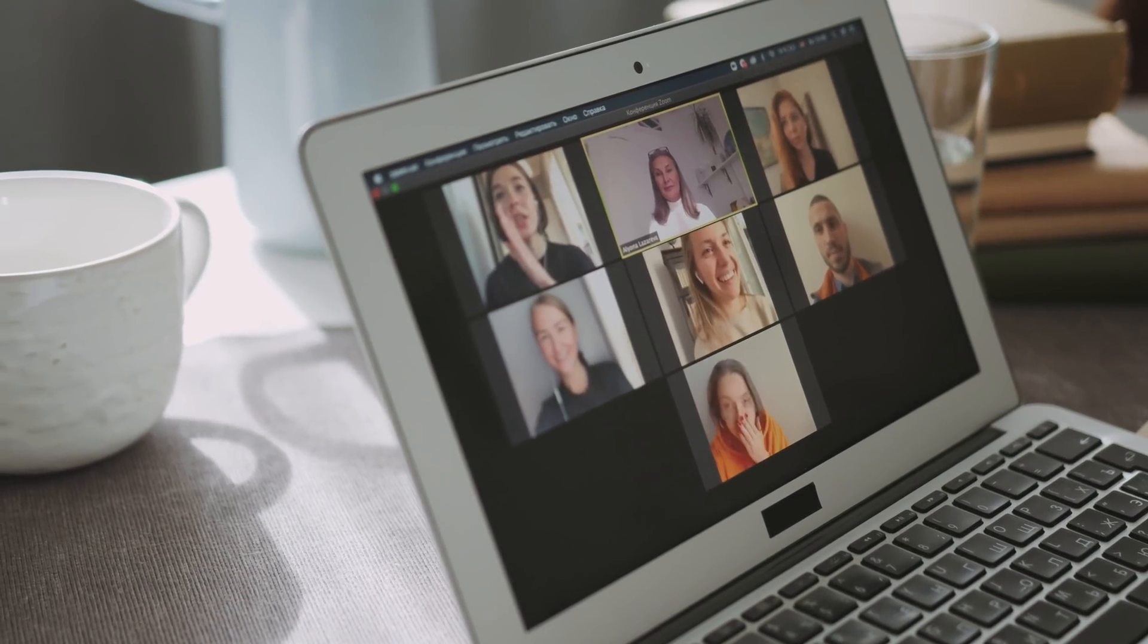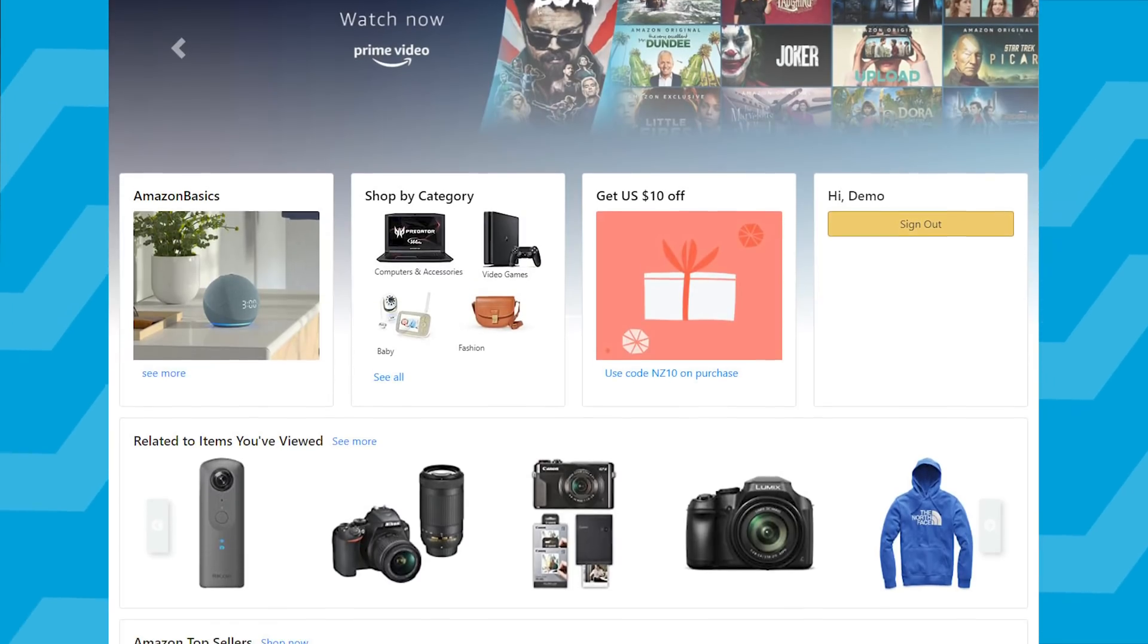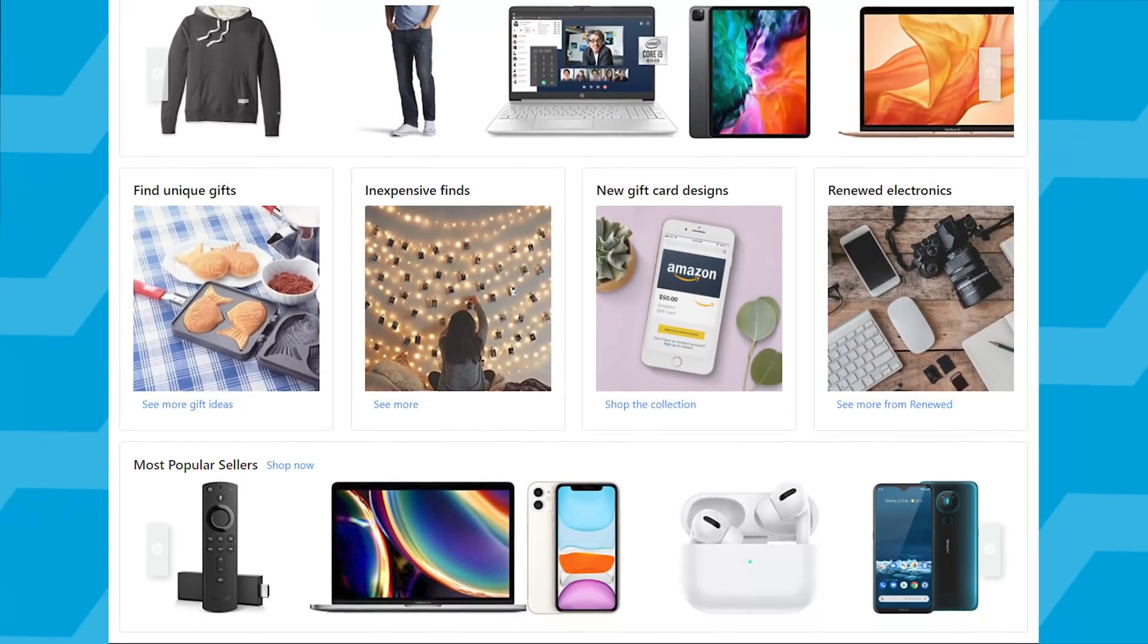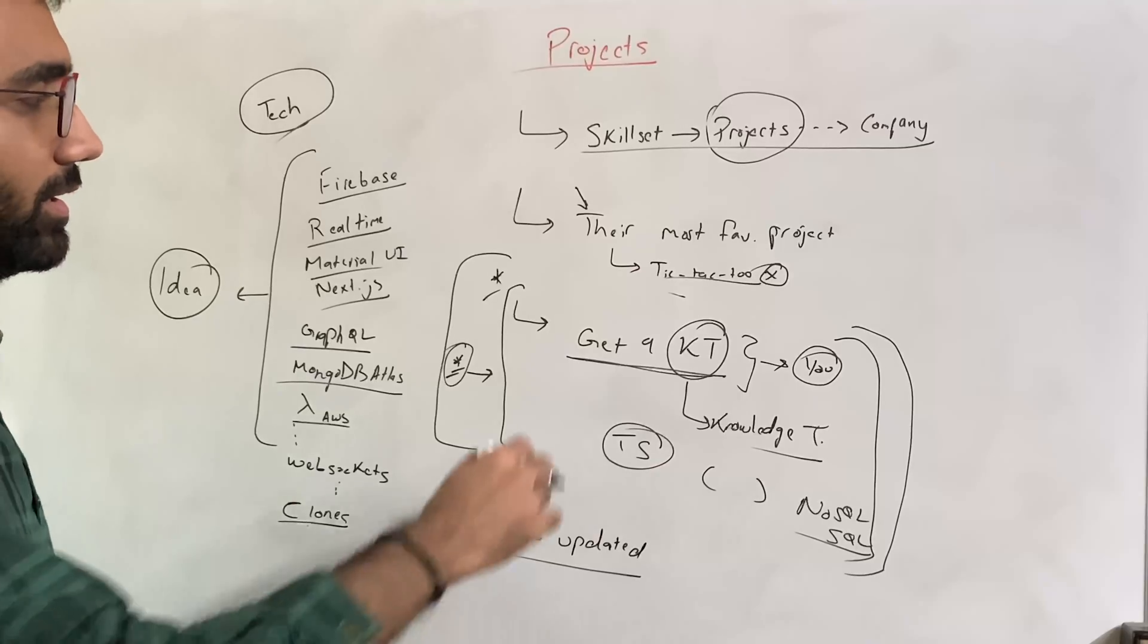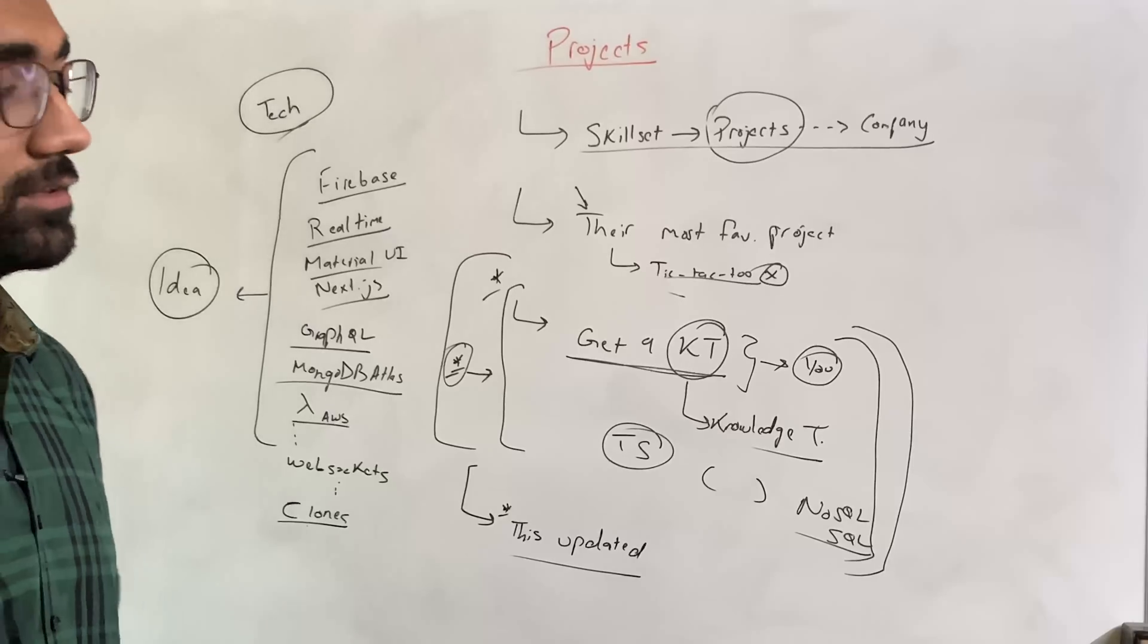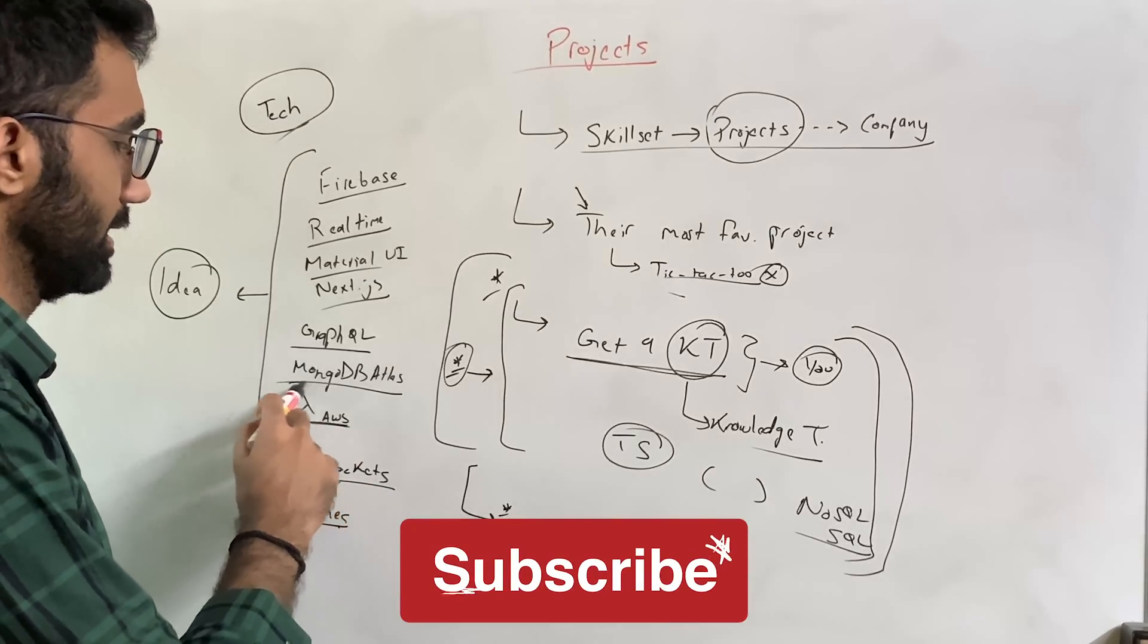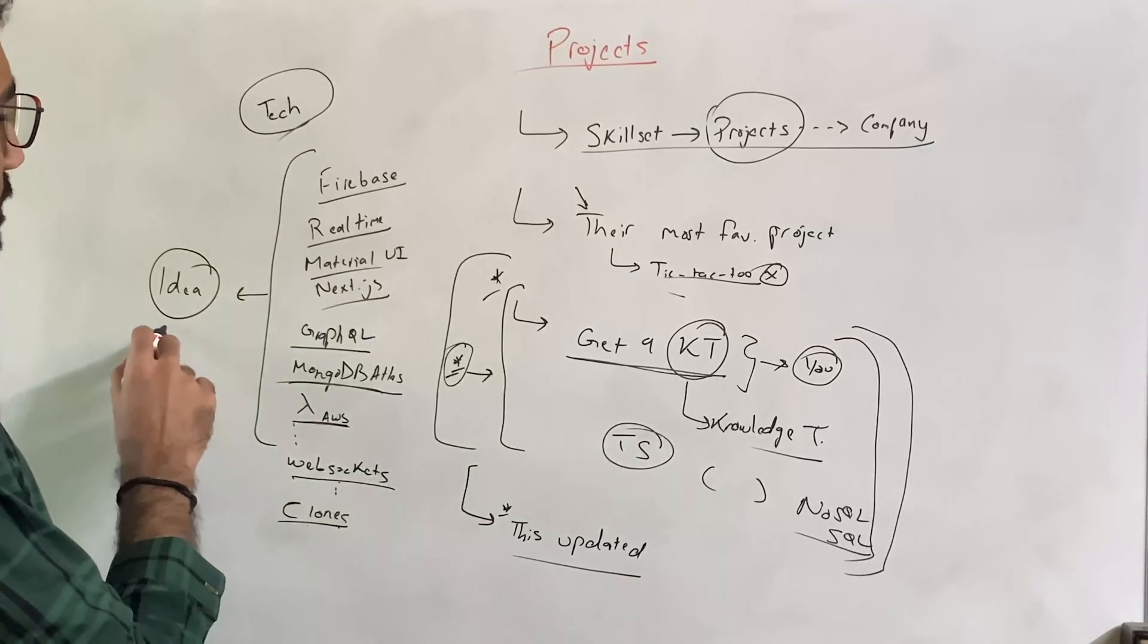Or live video conferencing is another project which might involve the use of web sockets. A lot of clones are also popular, which is also something which a lot of people prefer. But this is only good if you are able to build it yourself from scratch because you're going to get stuck in this point, in this part, if you just download a code base and you're not able to justify the choices you have made. So clones might also be a good option, but only when you are able to deploy it perfectly and understand in and out of the code which you have downloaded.